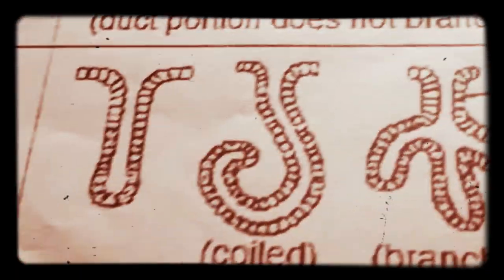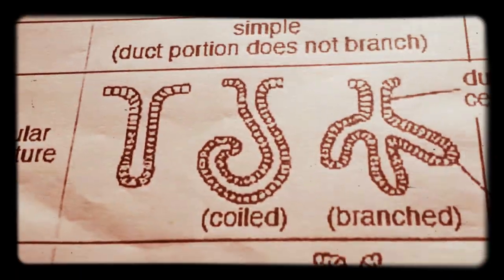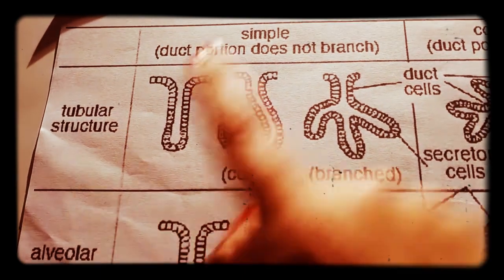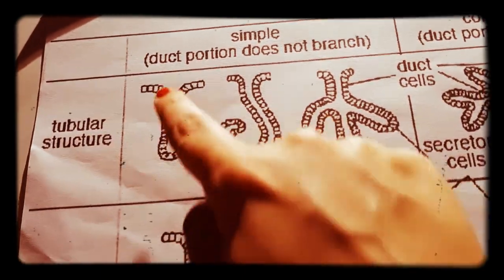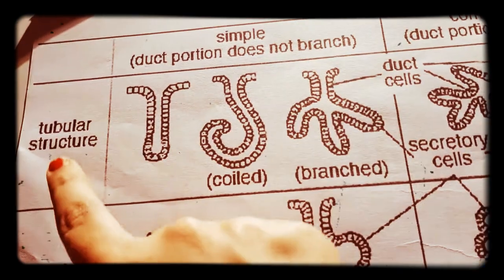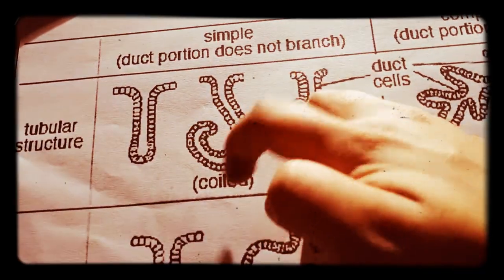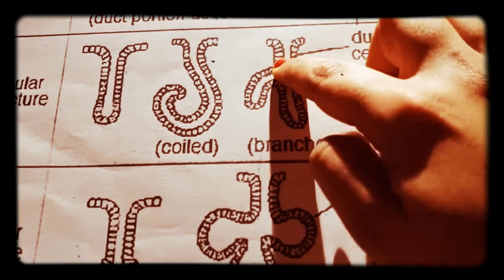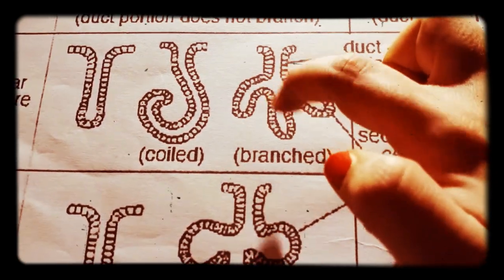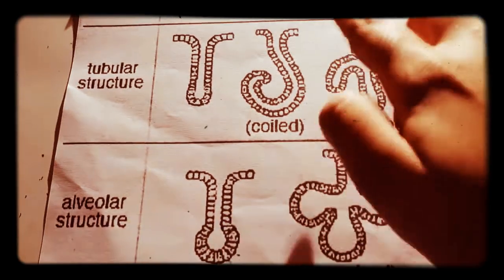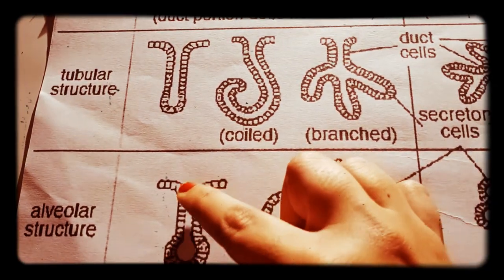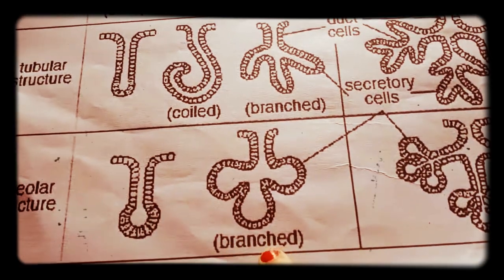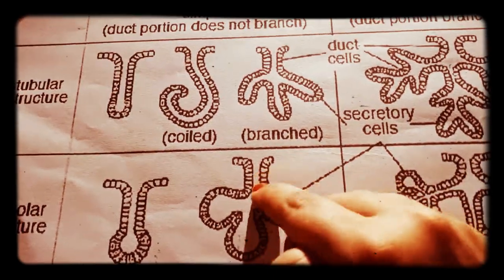The secretory unit has two forms: tubular and alveolar. Simple tubular has a single duct with a tubular secretory unit. Simple coiled tubular has the same but the secretory unit is coiled. Simple branched tubular has a single duct but the secretory unit branches. Simple alveolar has a single duct with a flask-shaped alveolar secretory unit, and simple branched alveolar has branching alveolar units but still a single duct.